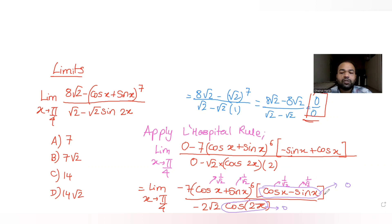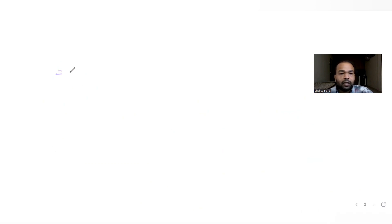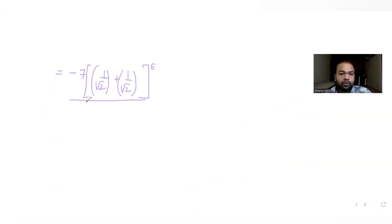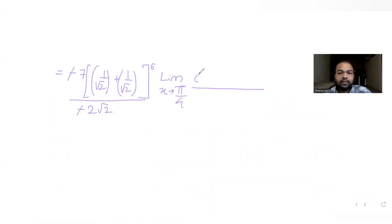Since we have 0/0 again, we can apply L'Hôpital's rule once more. But first, let's substitute x = π/4 into the non-zero factor: −7·(1/√2 + 1/√2)^6 = −7·(√2)^6 = −7·8 = −56, divided by −2√2. We isolate the remaining limit: (cos x − sin x) / cos 2x as x → π/4.